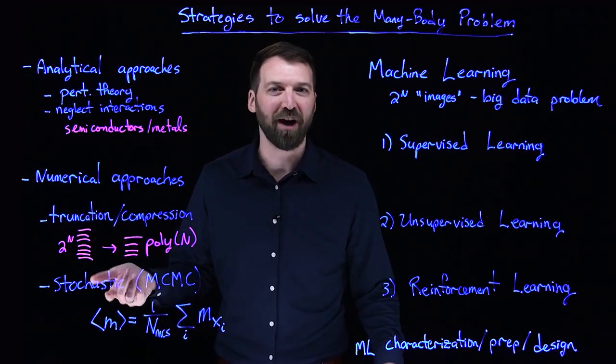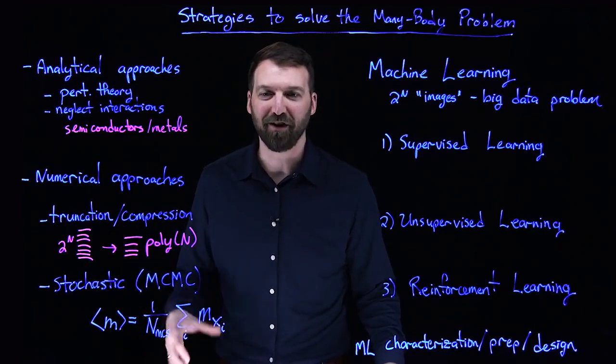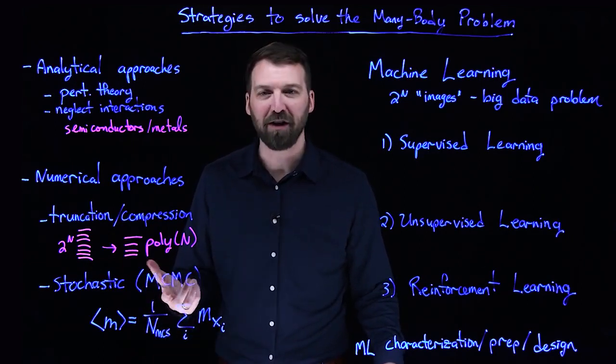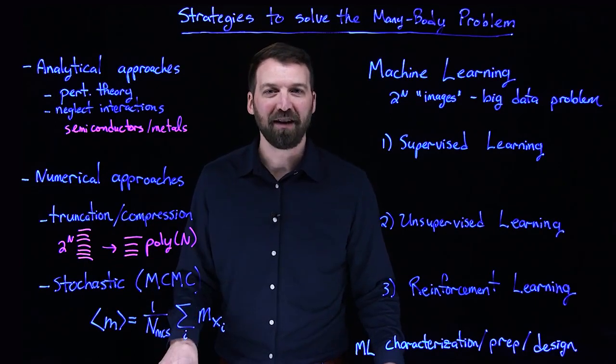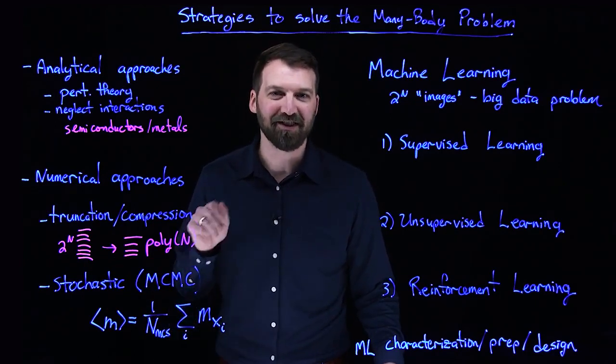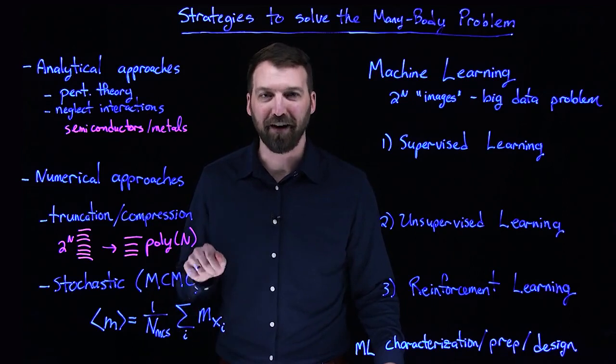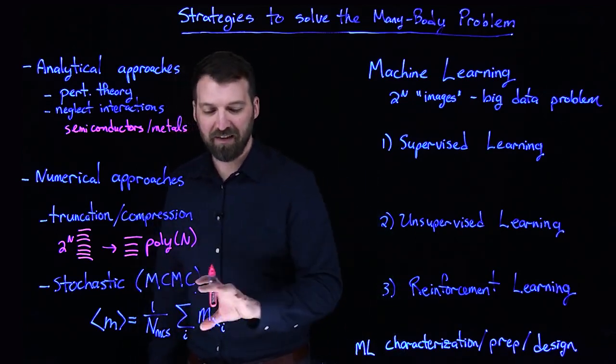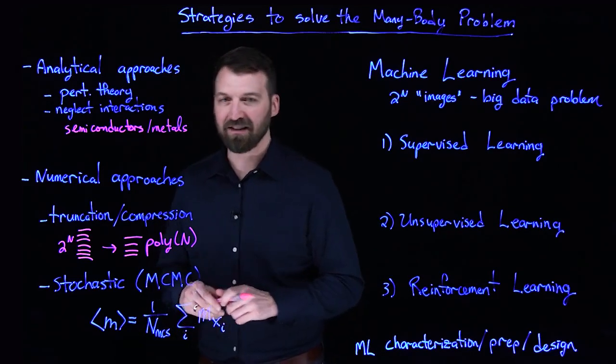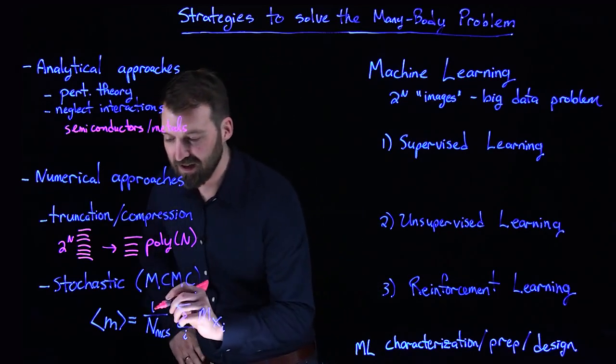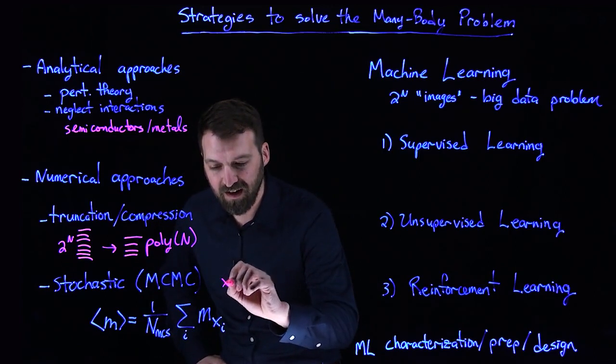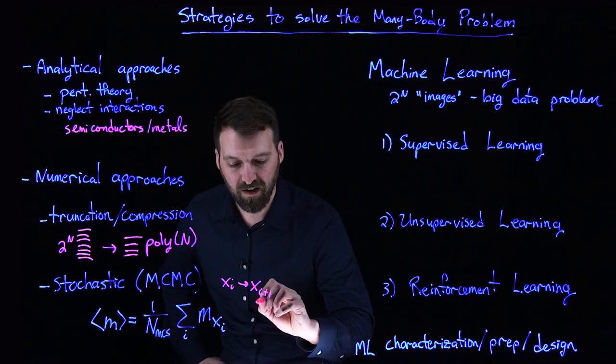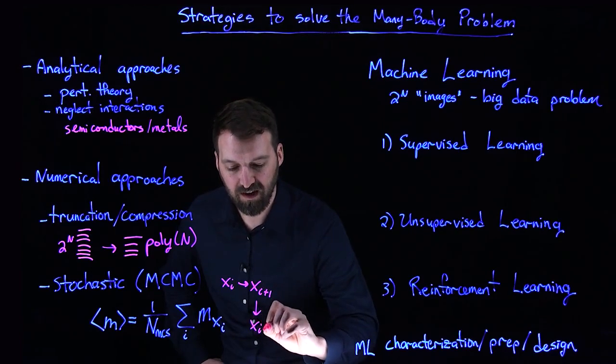Another main sort of strategy for solving many-body interacting systems is stochastic approaches based on Markov chain Monte Carlo. So these require a statistical sampling of the configurations that make up the wave function, which I talked about previously. So in these methods, you imagine that some probabilistic technique samples configurations according to a Markov process.